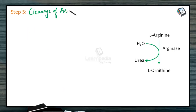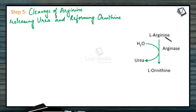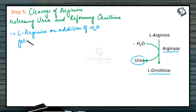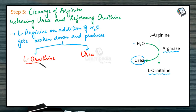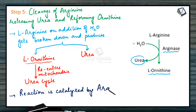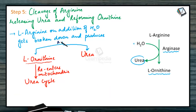Step 5: Cleavage of arginine, releasing urea and reforming ornithine. L-arginine is broken down by the addition of water in the presence of the enzyme arginase to produce urea and L-ornithine. The L-ornithine so formed then re-enters mitochondria to run another urea cycle, and the cycle is complete.